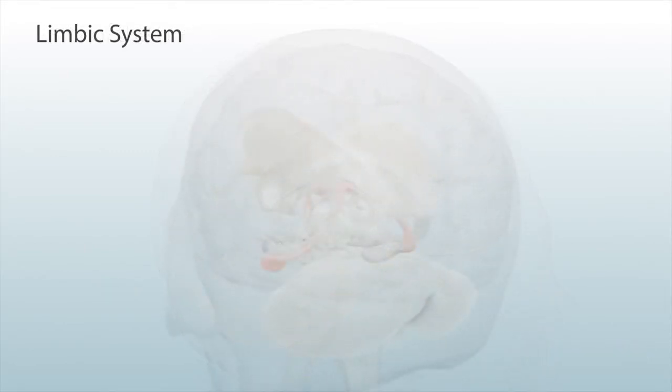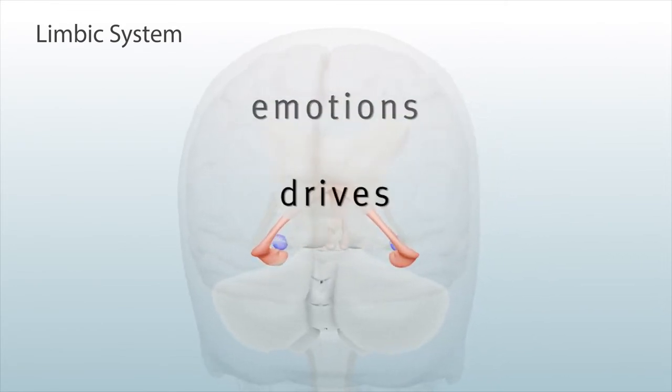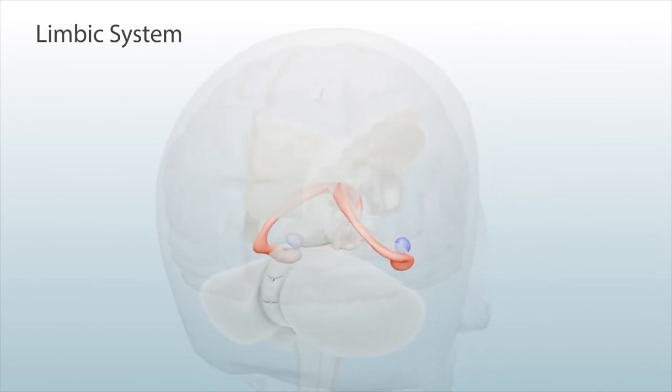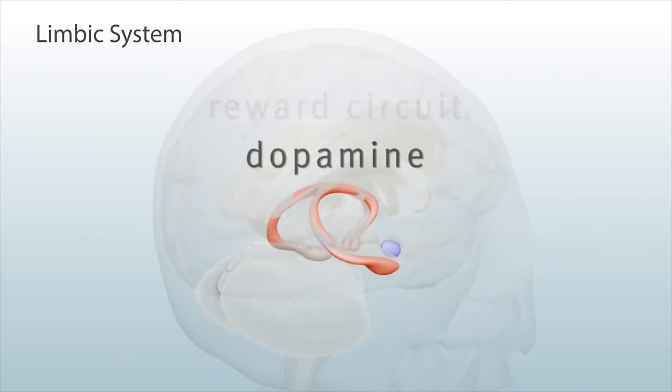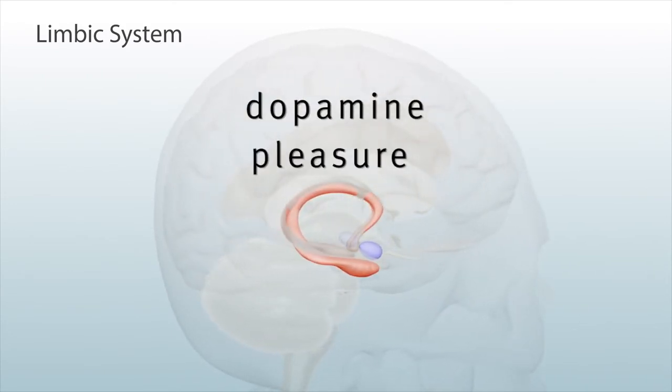The limbic system, a region under the cortex, processes our emotions and drives. It contains the brain's reward circuit, which releases the chemical dopamine, making us feel pleasure.